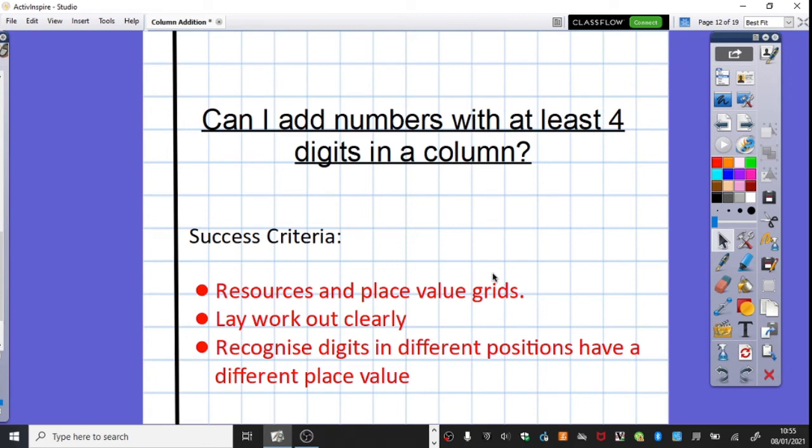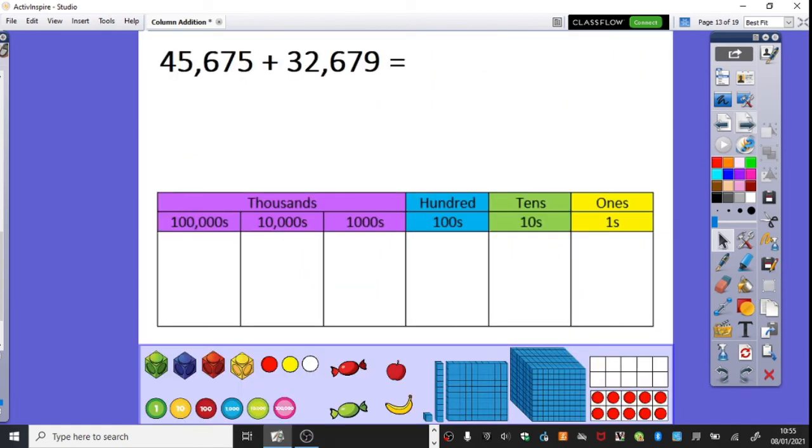So to be successful, we need to use resources. Maybe you might have counters at home you wish to use. And place value grids are going to be really useful today to ensure that actually our work is laid out clearly and we really think about the value of different digits and making sure that it is really clear the value of those digits and where they go.